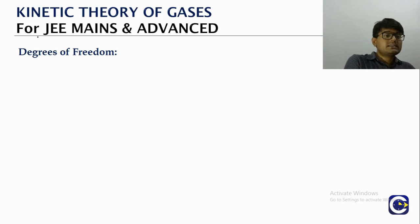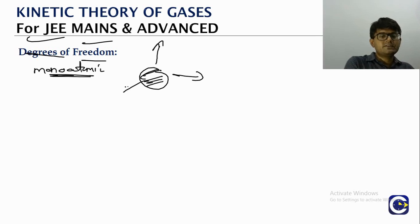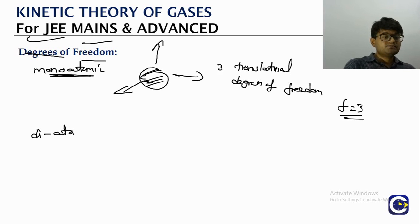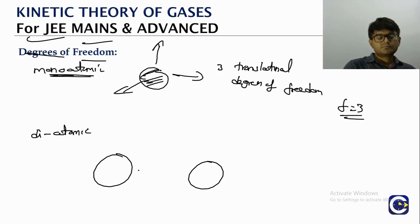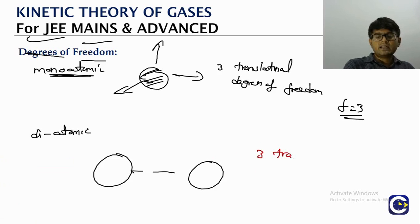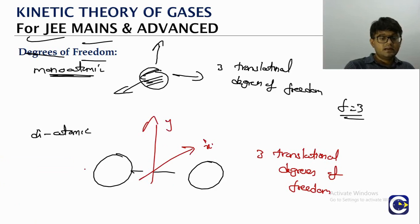A degree of freedom is an independent direction of motion. For a monoatomic ideal gas (single particle/point mass), there are only 3 translational degrees of freedom — f = 3. For a diatomic molecule (two atoms), we still have 3 translational degrees of freedom, but additionally the molecule can rotate.